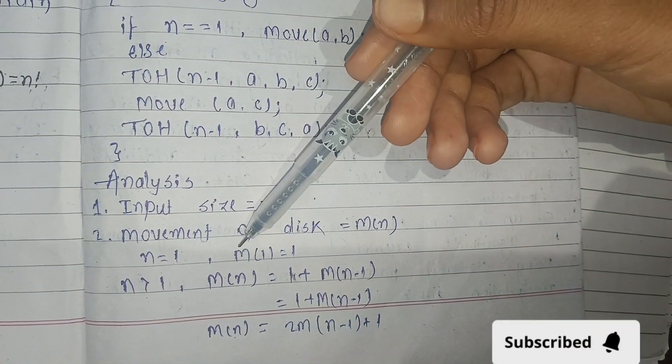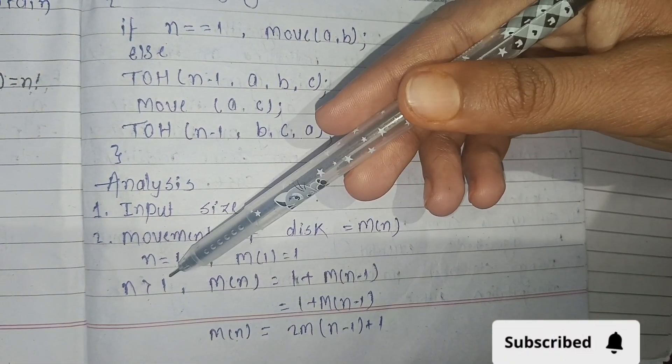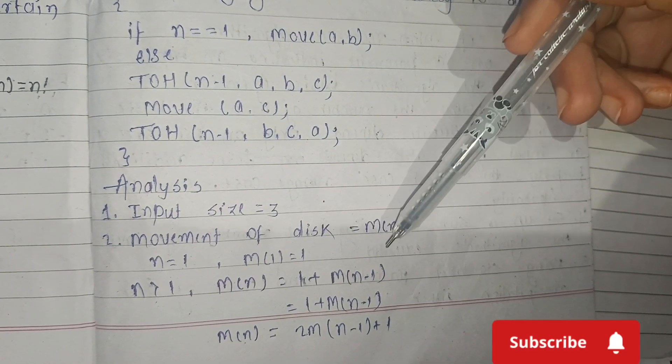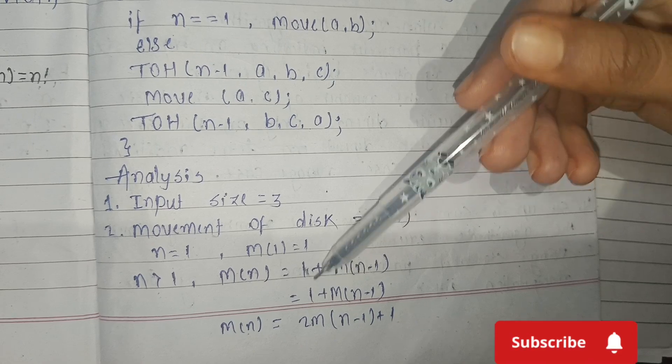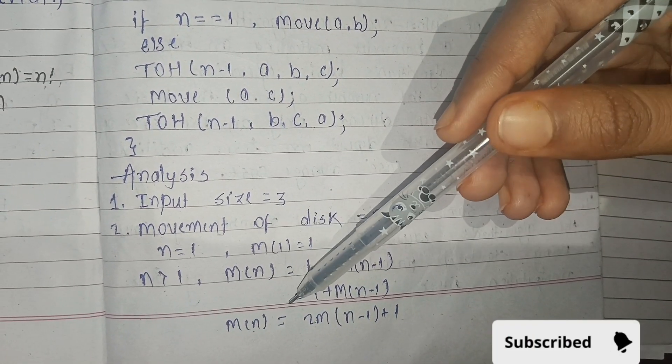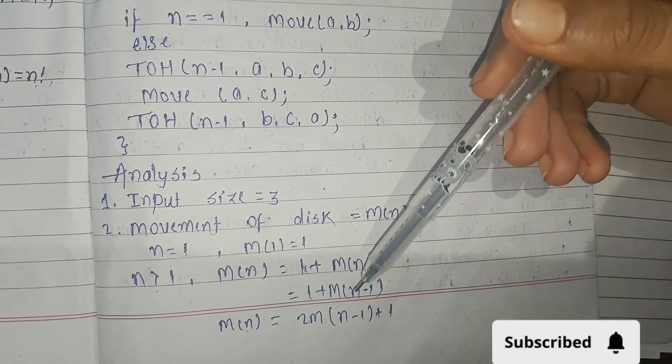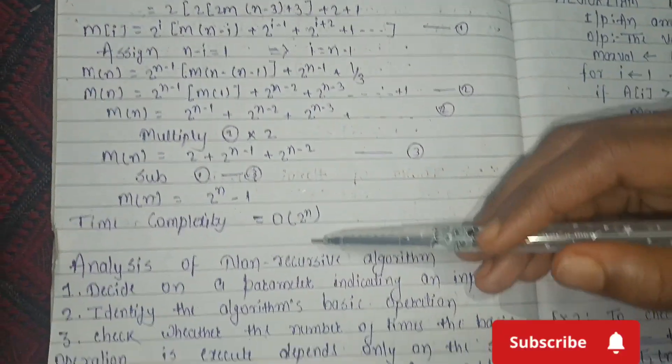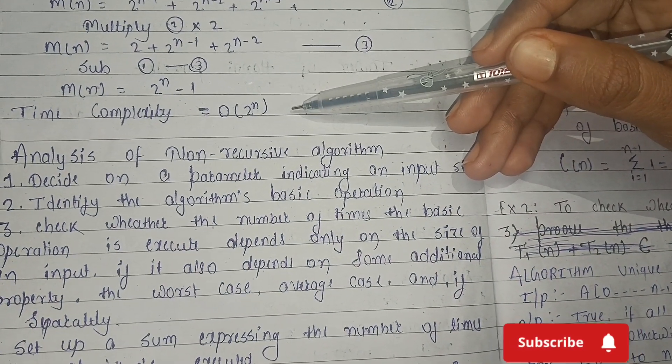Analysis for Tower of Hanoi: input size equals 3. Movement of disk is m(n). When n=1, m(n)=1. When n greater than 1, m(n) = 1 + m(n-1). Then m(n) = 2m(n-1) + 1. Time complexity is omega 2 power n.